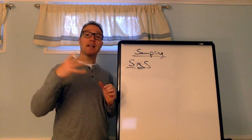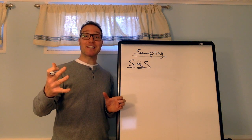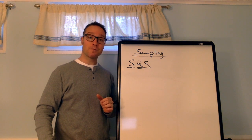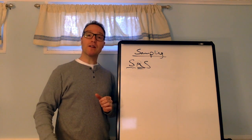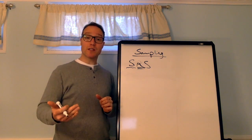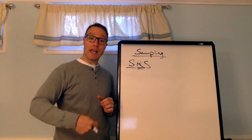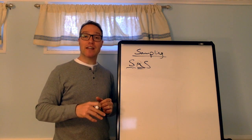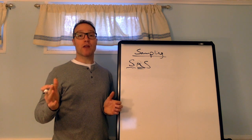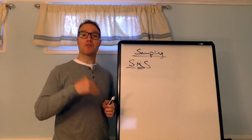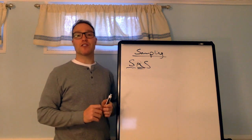All right, so a simple random sample usually takes place like this. You obtain a list of members from the population. You assign them a number. And then you use a random number generator or a lottery system like a bingo cage or putting numbers in a hat, something old-fashioned like that. But today, we use random number generators that can be found on the Internet or in calculators or in software to generate members of the sample.